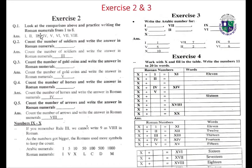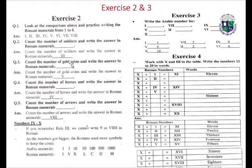Exercise two: look at the comparison above and practice writing Roman numbers from one to eight — one, two, three, four, five, six, seven, and eight. Count the number of soldiers and write the answer in Roman numerals: three.